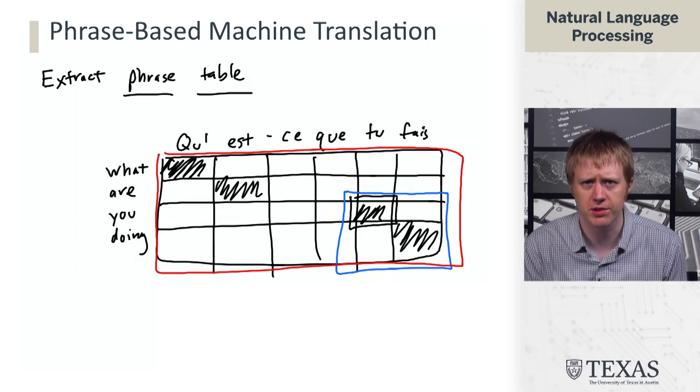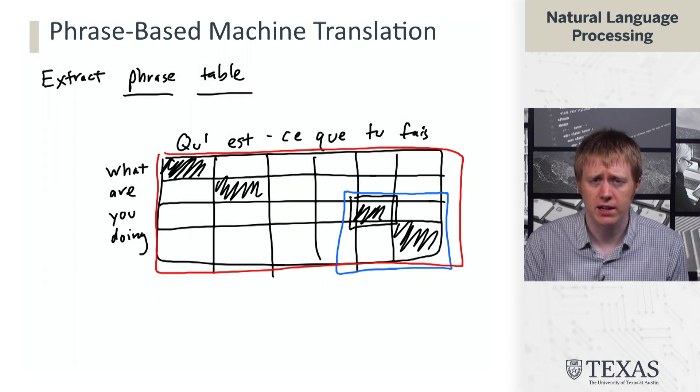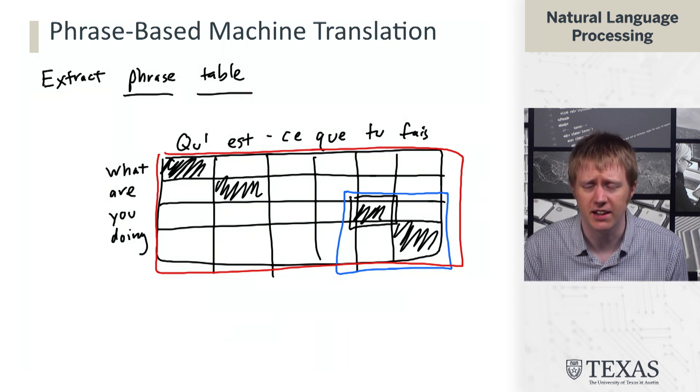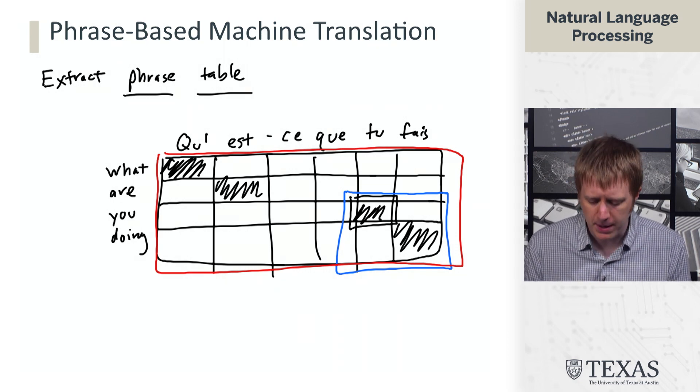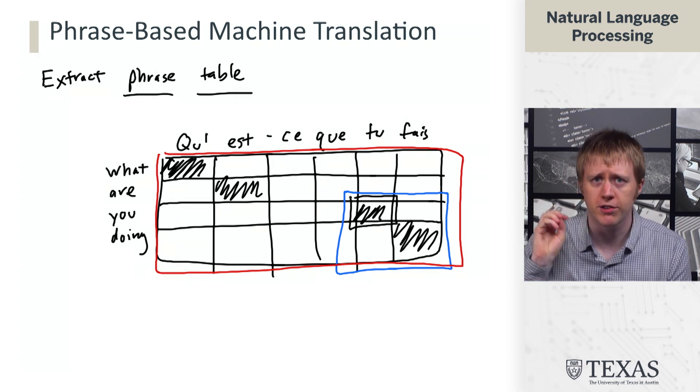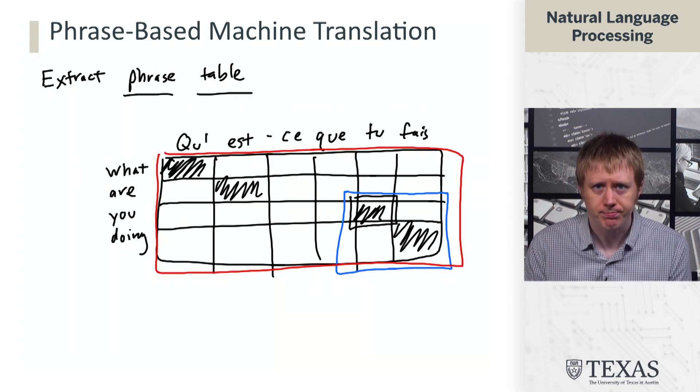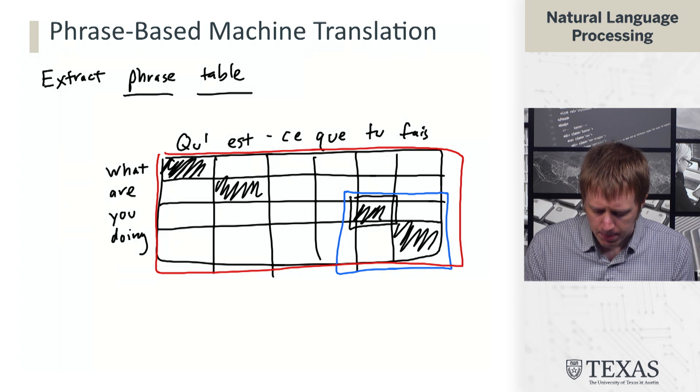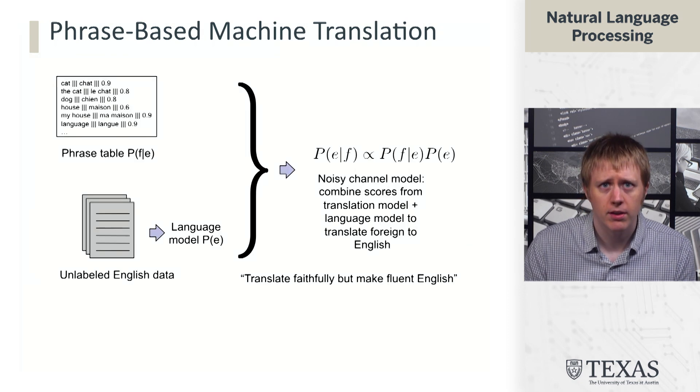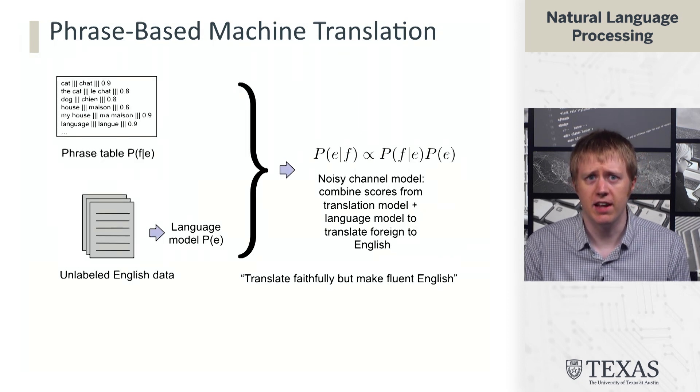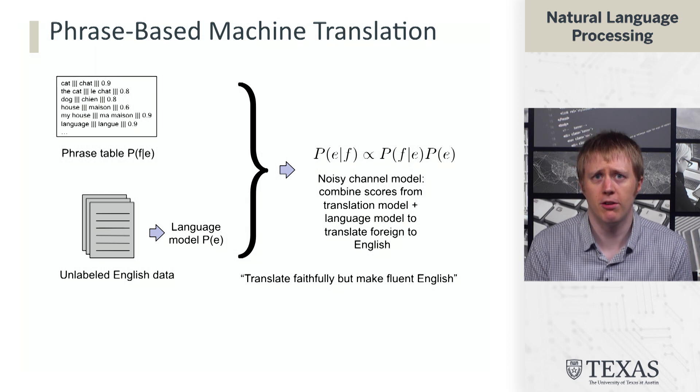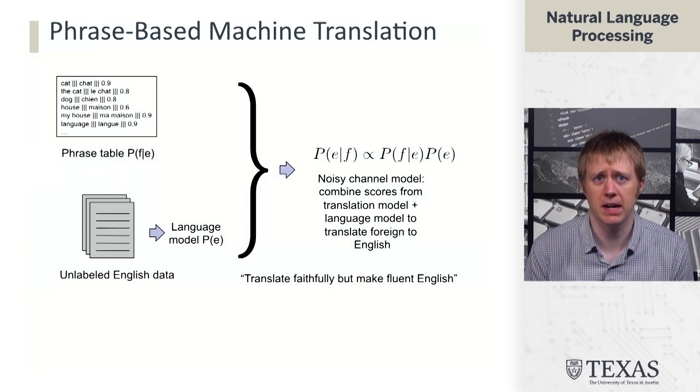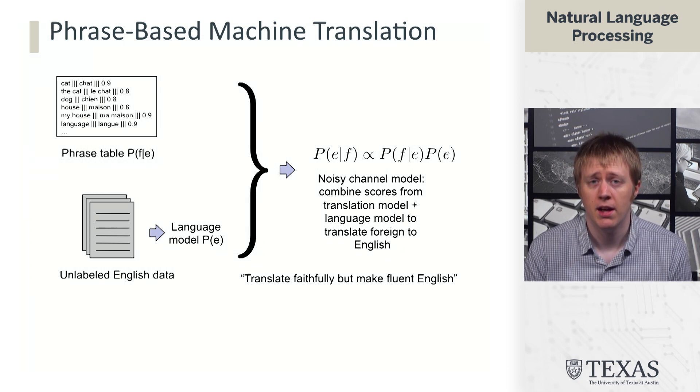There's a lot of heuristics involved in this procedure. And so we're not going to discuss it in a ton of detail. But this is the basics of how we go from words to what we call a phrase table. And now, given a phrase table, we can build our phrase-based machine translation system by combining that with a language model. This is just going to be an n-gram language model like we were seeing before.